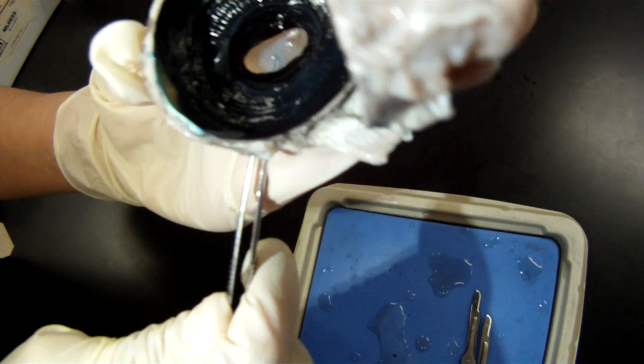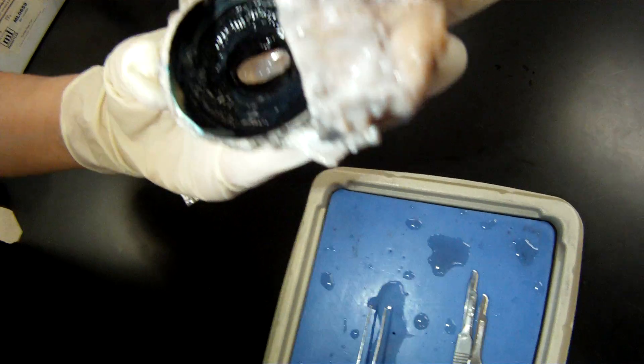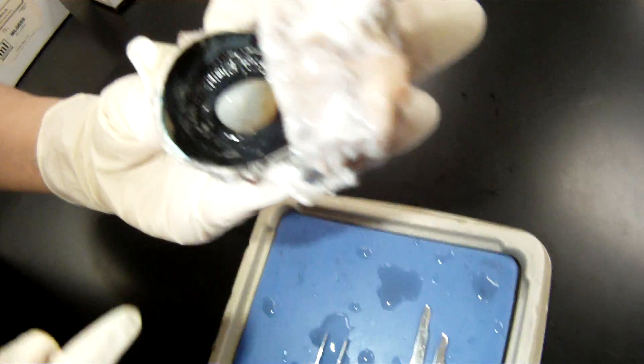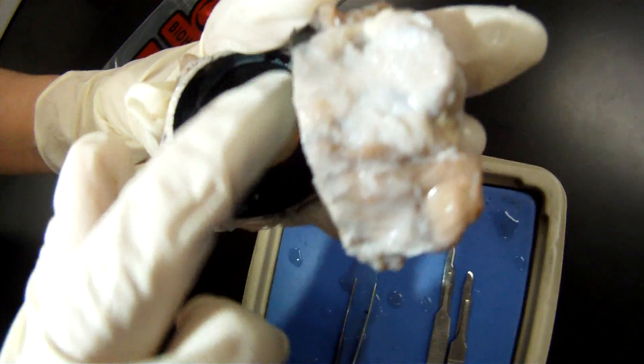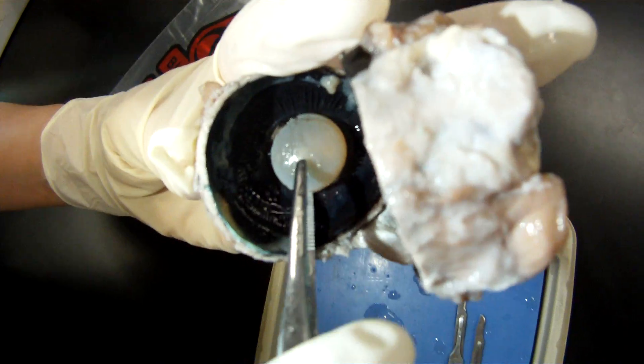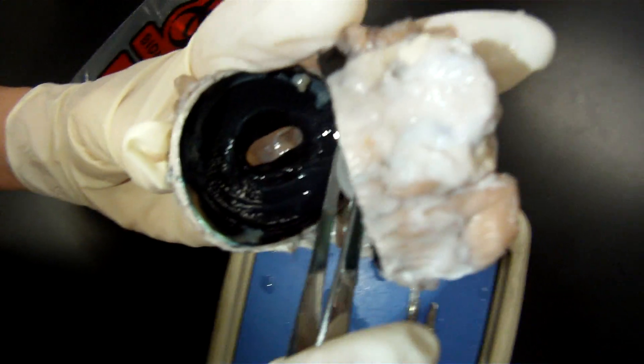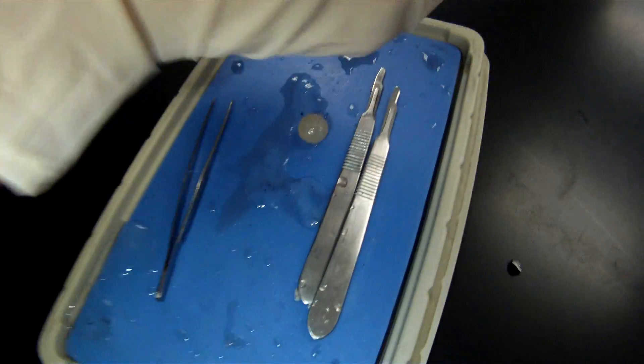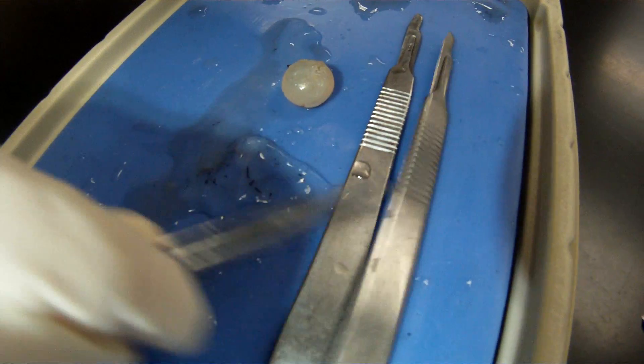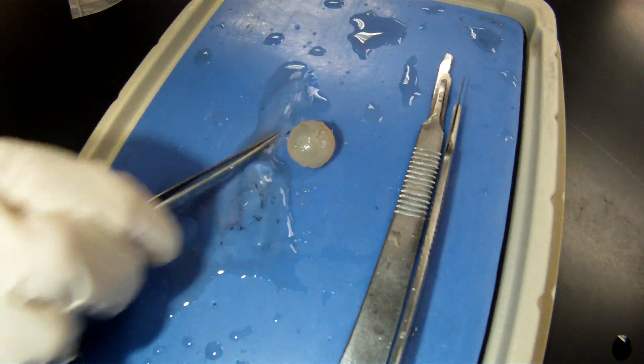We also took out the vitreous humor contained in the posterior chamber. It fell out. There's our lens, right there. It was attached to suspensory ligaments, which was attached to the ciliary body. We had to break those to get it out. This was our vitreous humor down here.